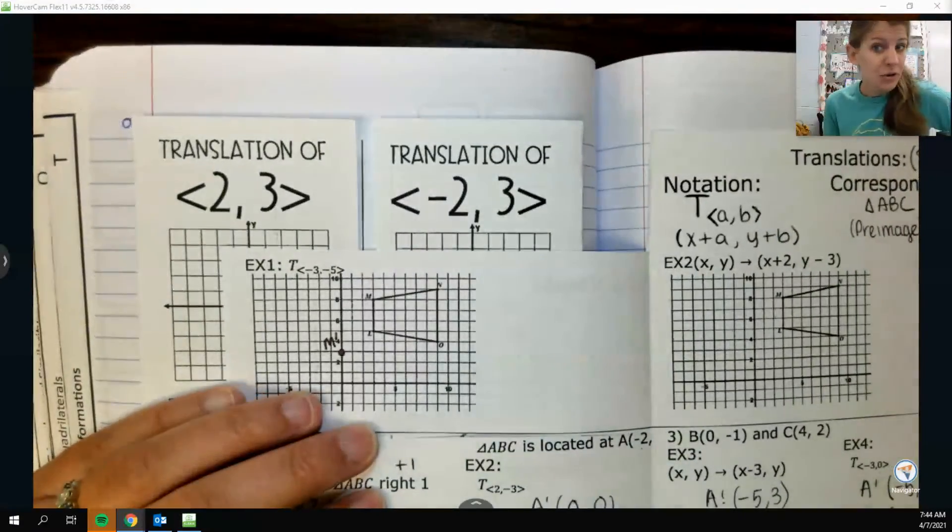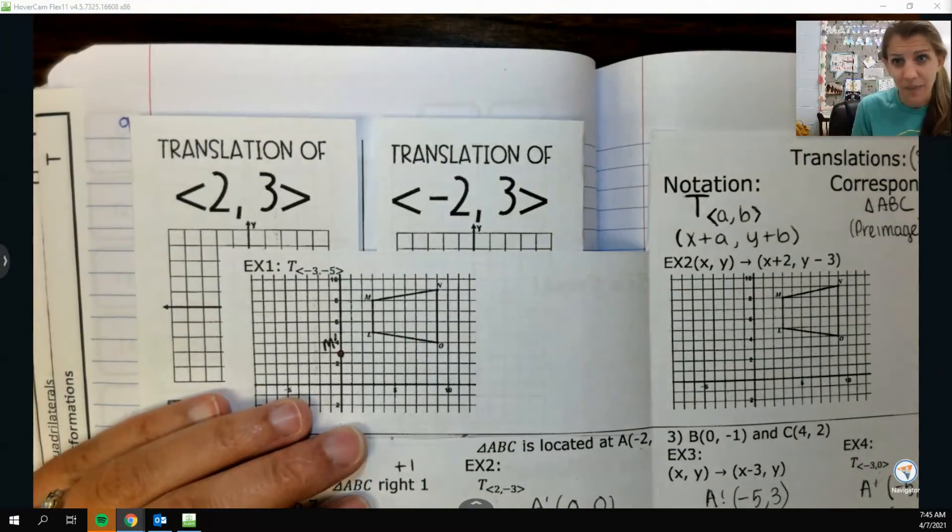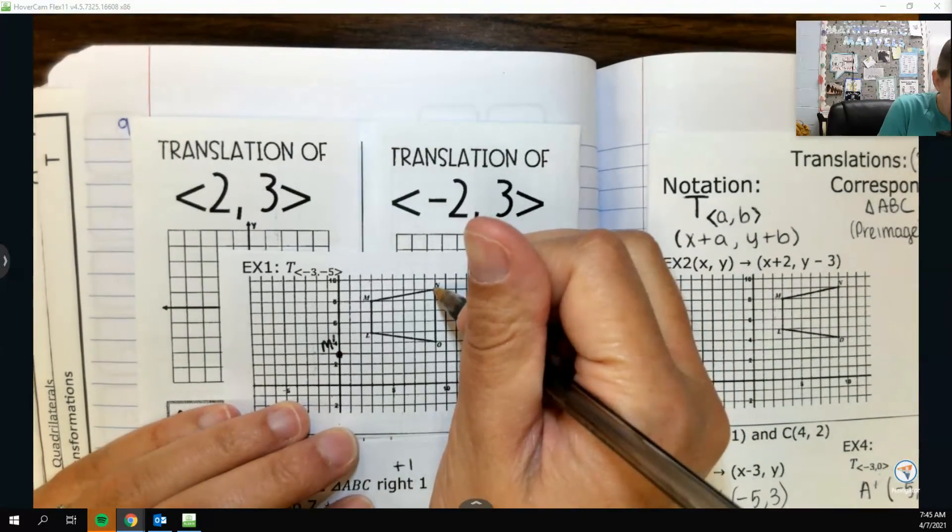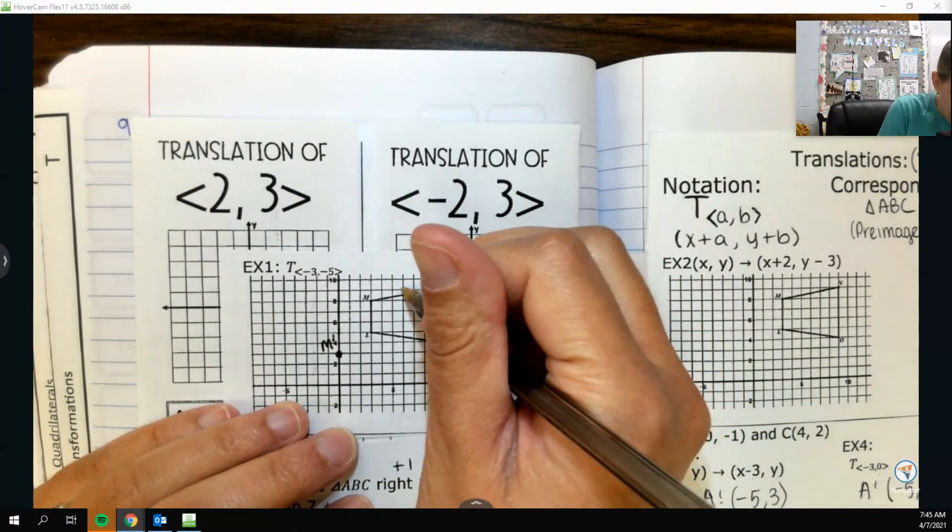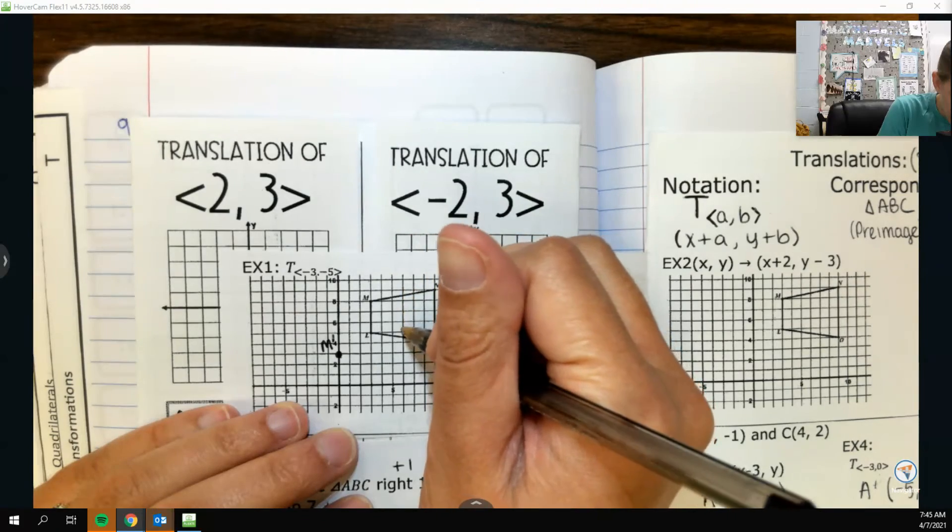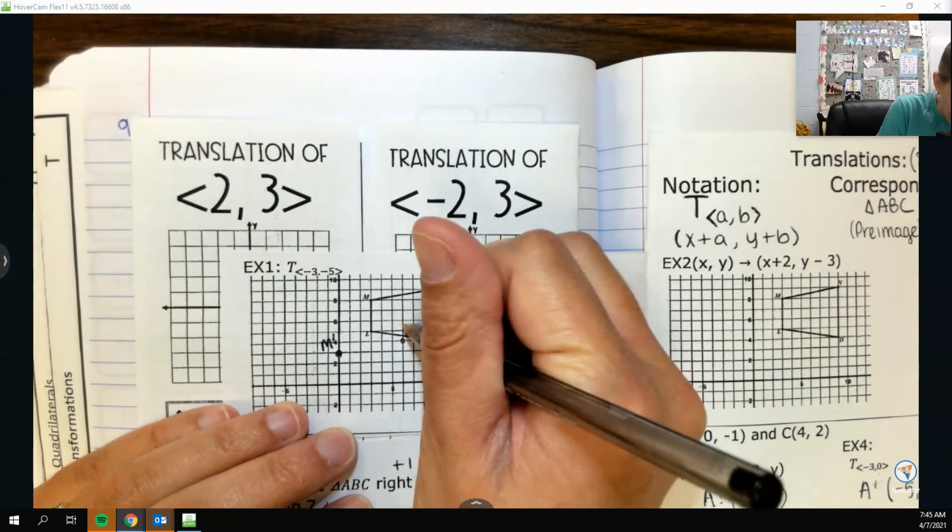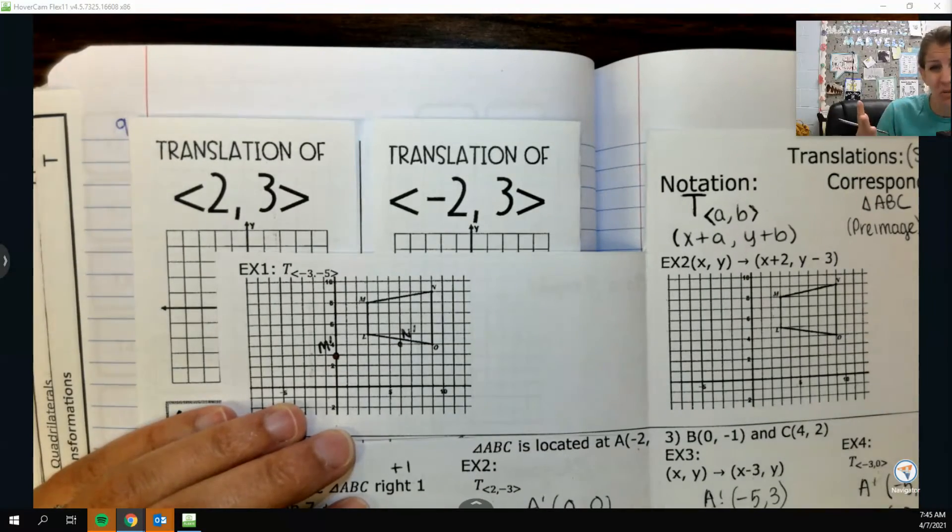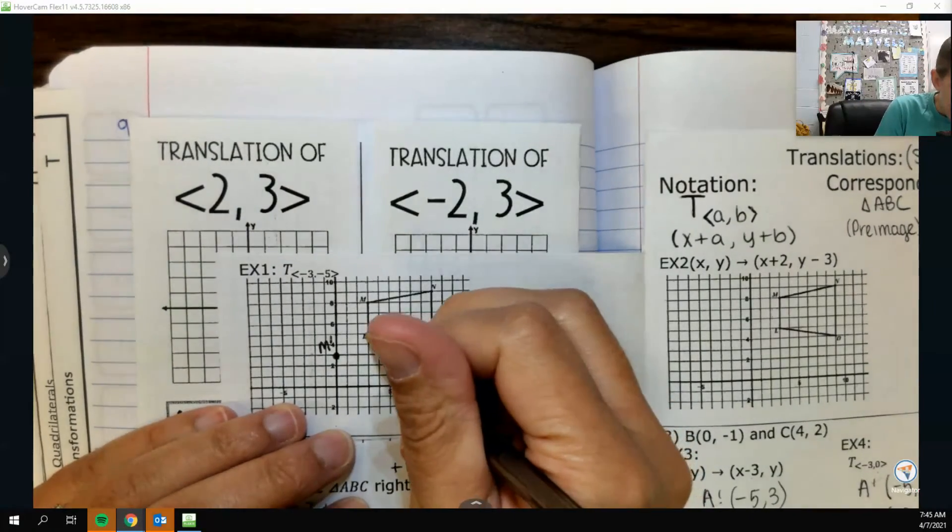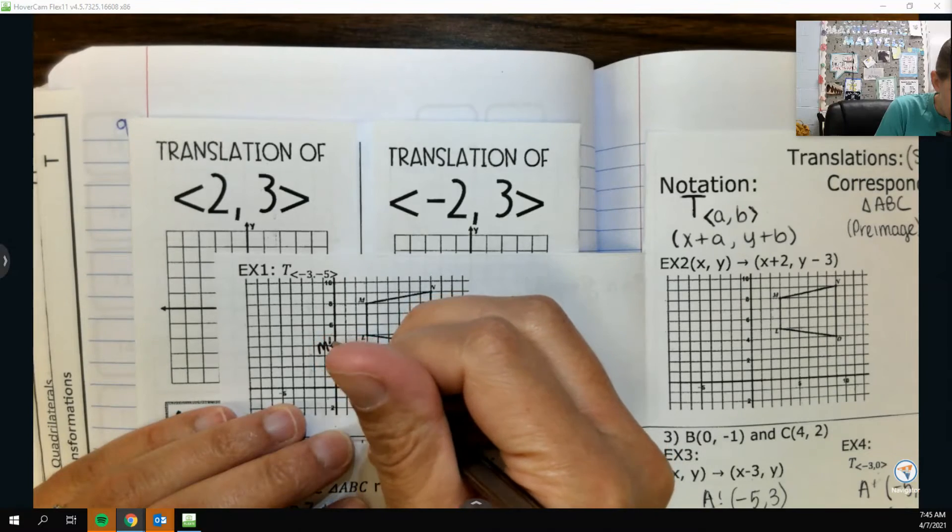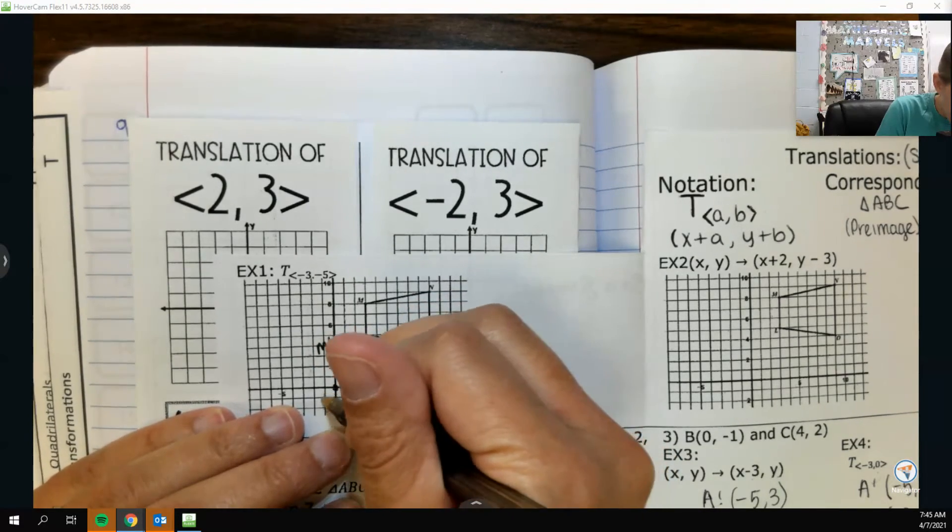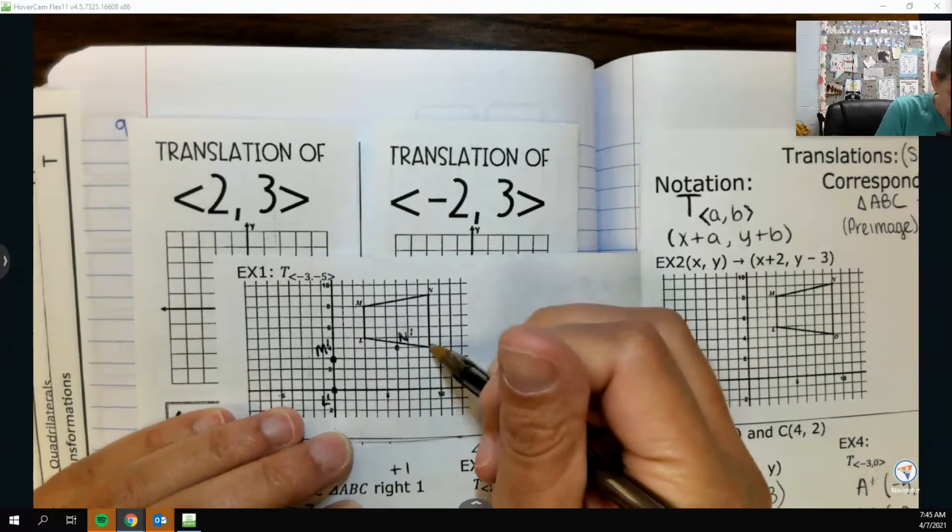Rather than writing out all the ordered pairs, I can kind of just count it out and plot my points. So N, I would go negative 3 comma negative 5, 1, 2, 3, 4, 5. And that would be N prime. And it is super important to label your points correctly so we know who's who. L, I would do negative 3 comma negative 5, 1, 2, 3, 4, 5.